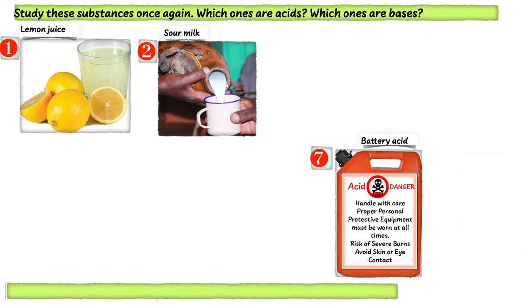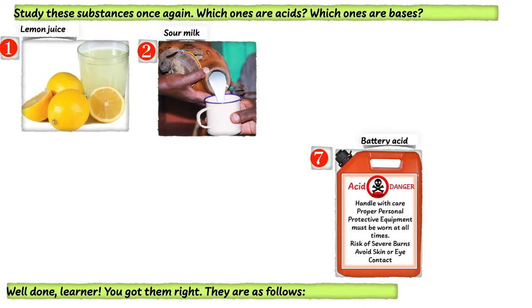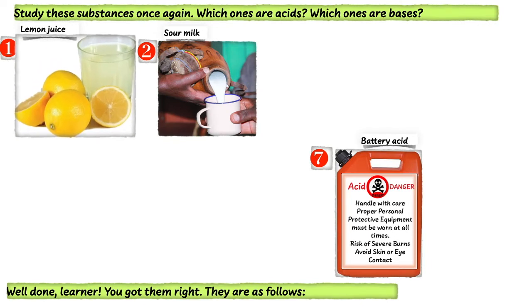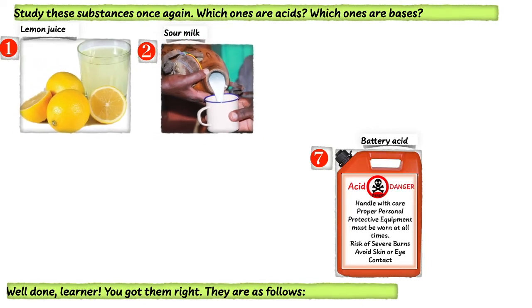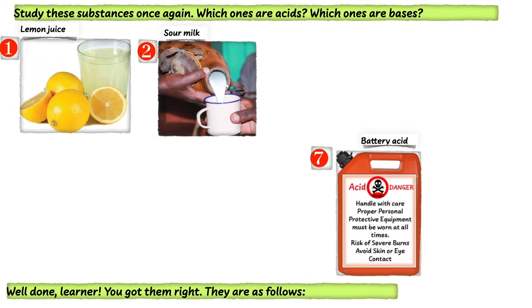Well done, learner, you got them right. They are as follows. These are the acids: 1. Lemon juice, 2. Sour milk, and 3. Battery acid.